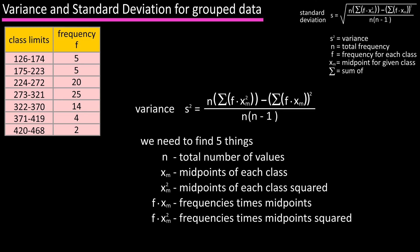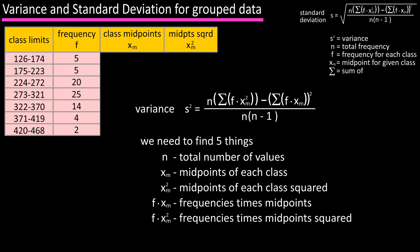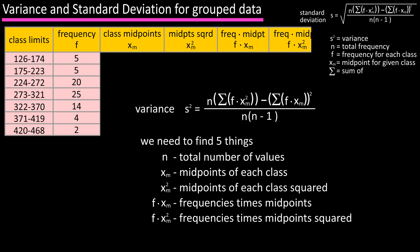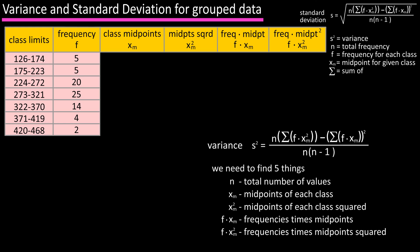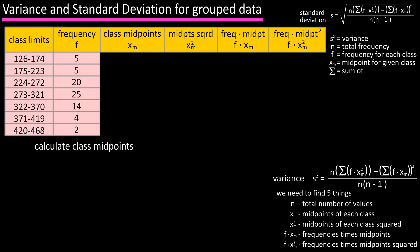The easiest way to approach this is to add columns to our table. Column 3 is the midpoint xm of each class, column 4 is xm² (midpoint squared), column 5 is f × xm (frequency times midpoint), and column 6 is f × xm² (frequency times midpoint squared).